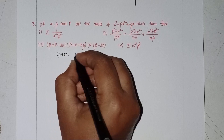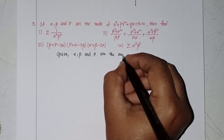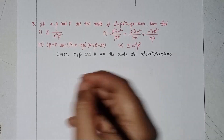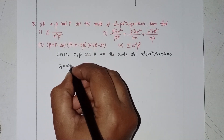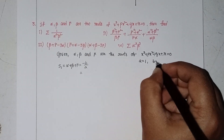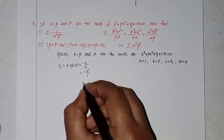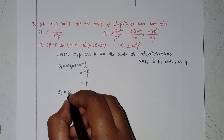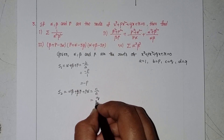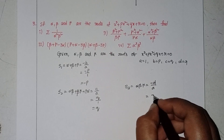We have the roots of x³ + px² + qx + r = 0. So alpha + beta + gamma = -b/a, where a=1, b=p, c=q, d=r. That means S1 = -p. S2 = αβ + βγ + γα = c/a = q. S3 = αβγ = -d/a = -r.